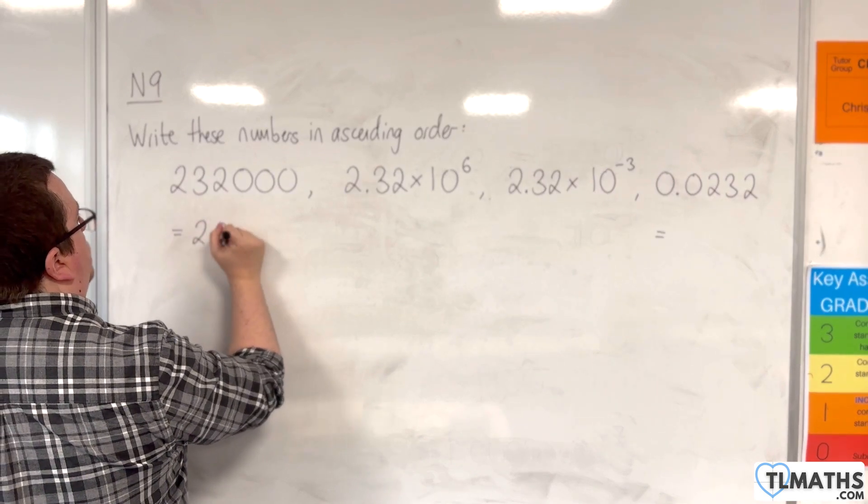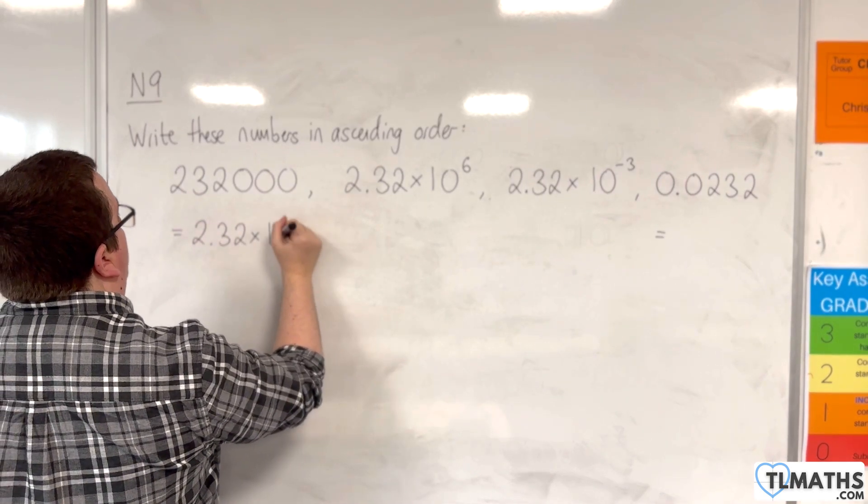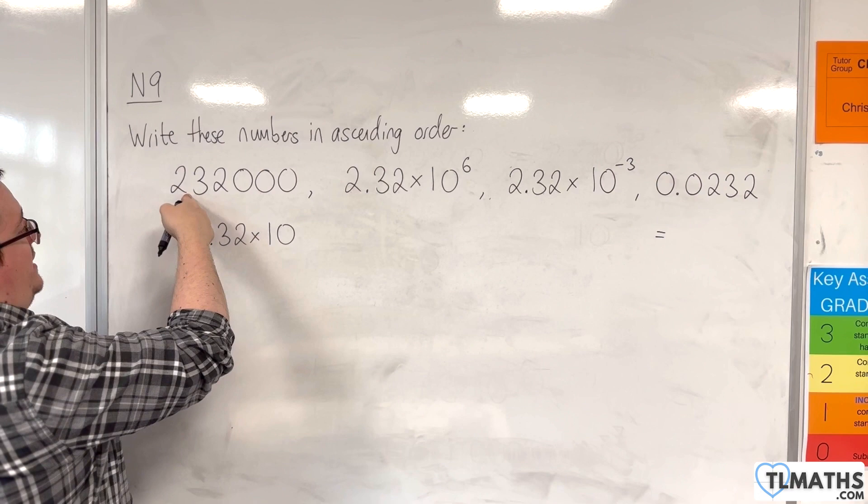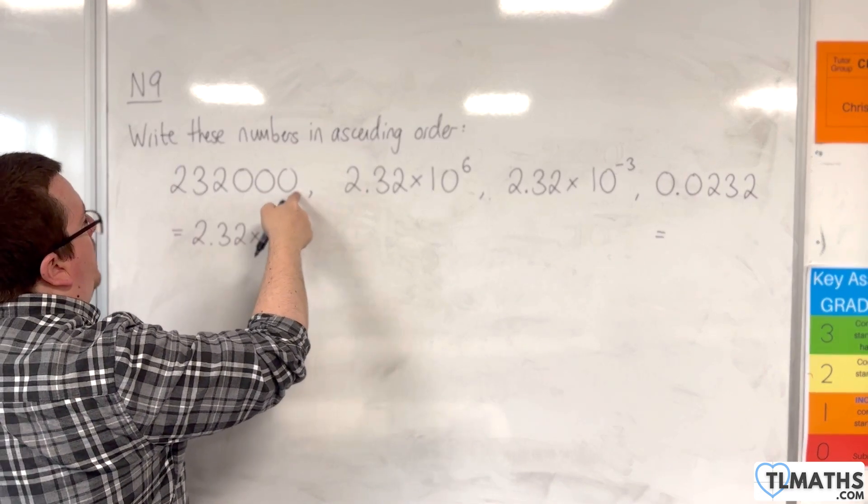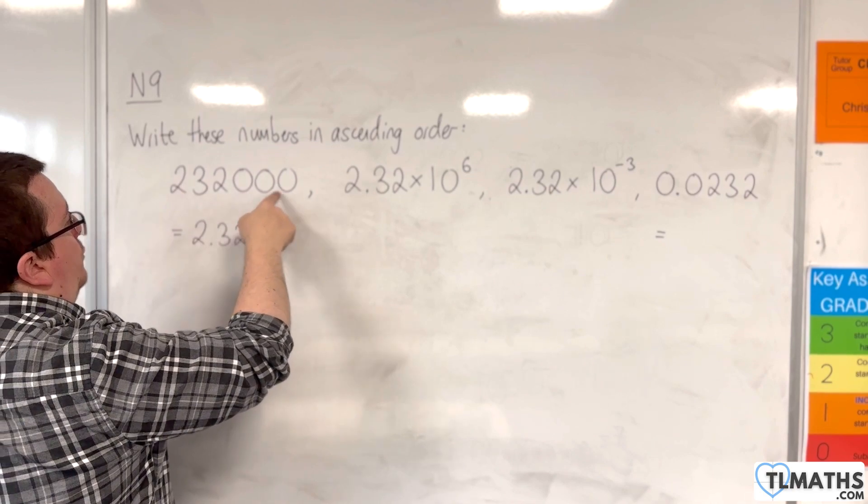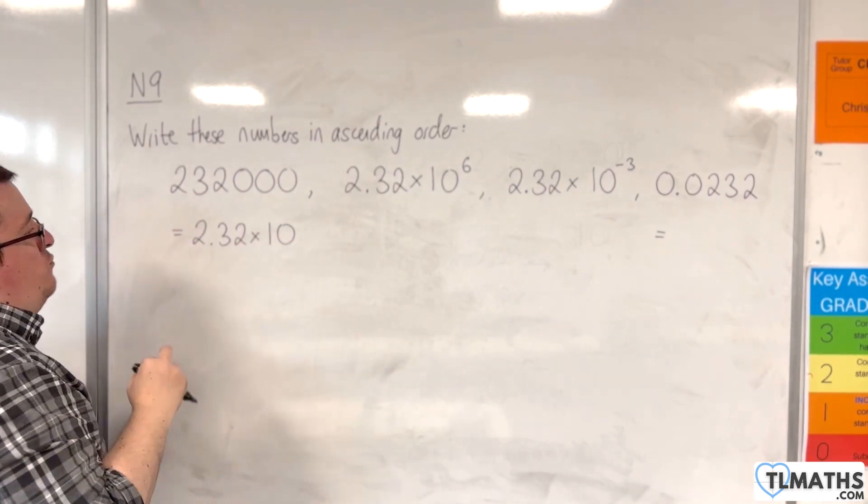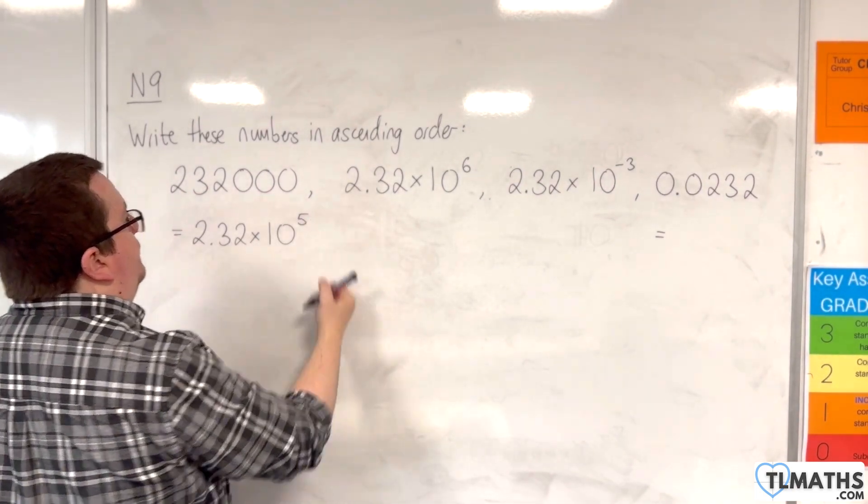will be 2.32 times 10 to the power of... So if the decimal point needs to go there, so it needs to go 1, 2, 3, 4, 5. We have 1, 2, 3, 4, 5 places to the right of the 2, so 10 to the 5.